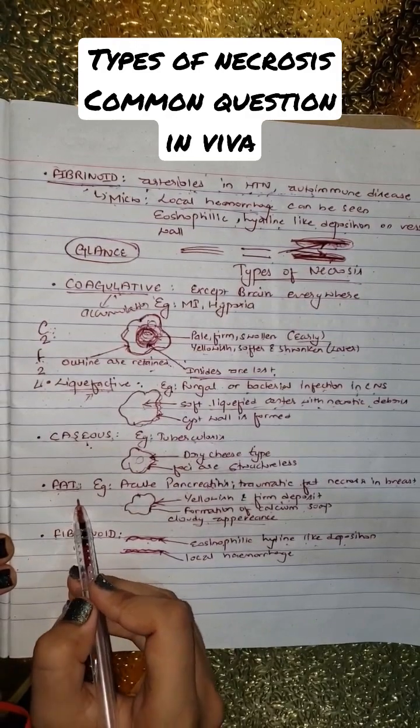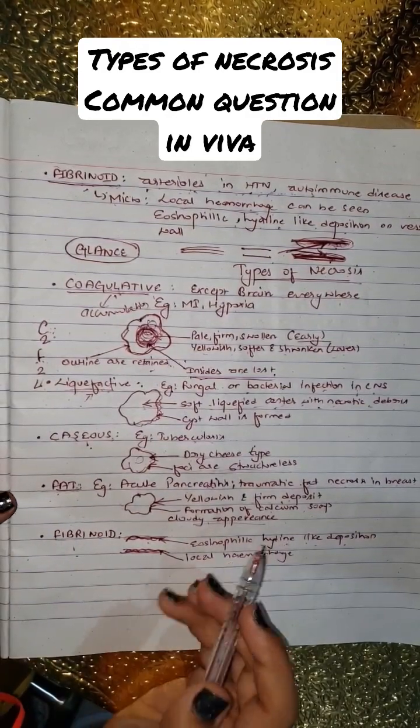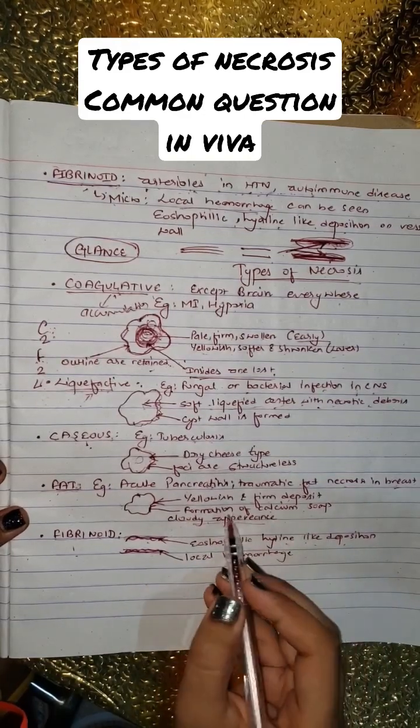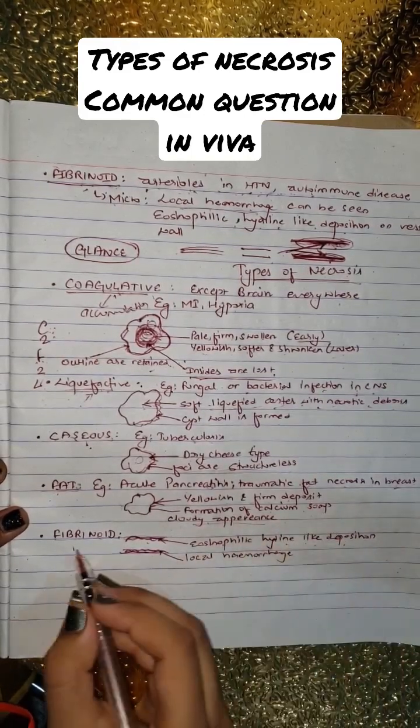Fat necrosis can be seen in many parts of our body like pancreatitis and breast. It is yellowish in color with firm deposits, and calcium soaps can be found.